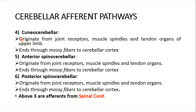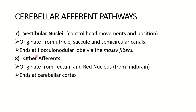These afferents come from the spinal cord. Number four, cuneocerebellar, originates from joint receptors, muscle spindles, and tendon organs of the upper limb, and ends through mossy fibers to the cerebellar cortex. Number five, anterior spinocerebellar pathway, originates from joint receptors, muscle spindles, and tendon organs, and ends through mossy fibers to the cerebellar cortex. Number six, posterior spinocerebellar, originates from joint receptors, muscle spindles, and tendon organs, and ends through mossy fibers to the cerebellar cortex. Number seven, vestibular nuclei, controls head movements and position, originating from the utricle, saccule, and semicircular canals, and ends at the flocculonodular lobe via mossy fibers.